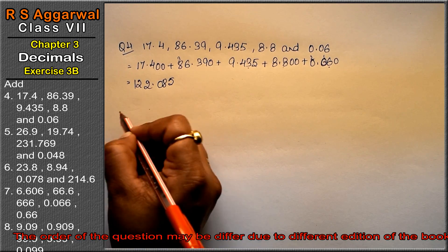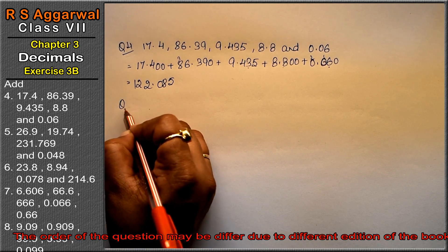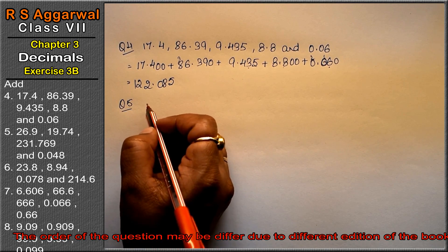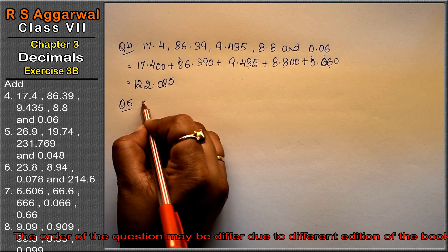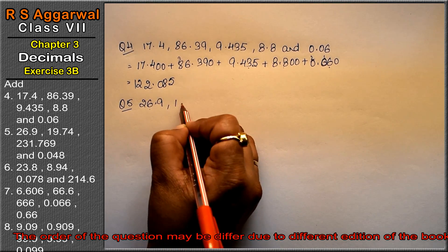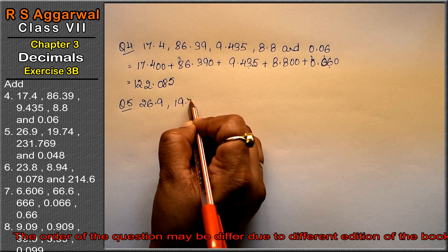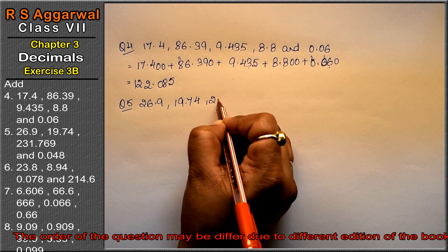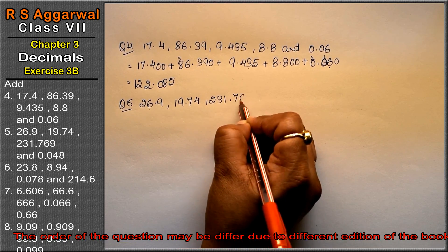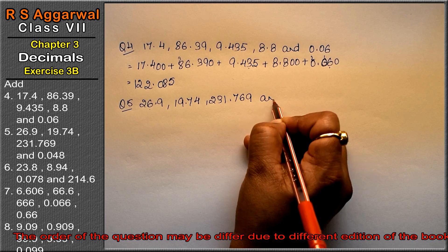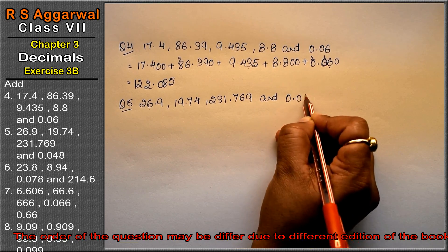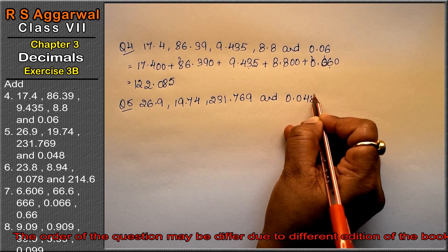That's the answer. Let's do question number 5. Question number 5 is 26.9, 19.74, 231.769 and 0.048.